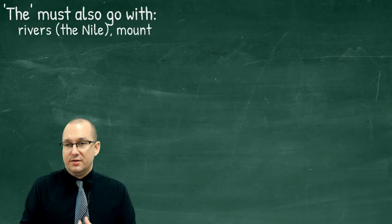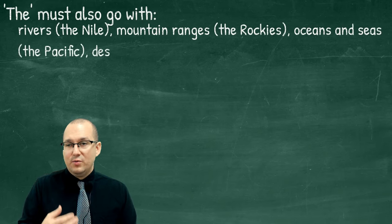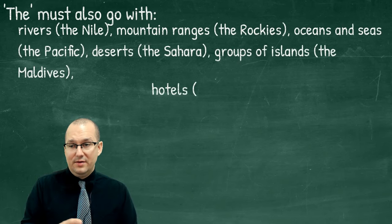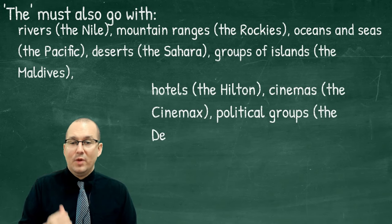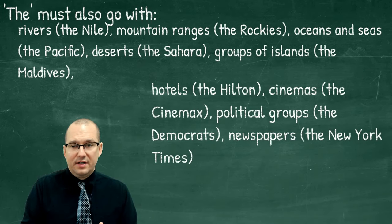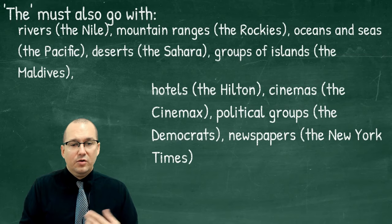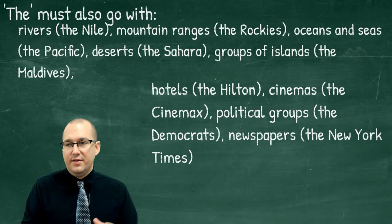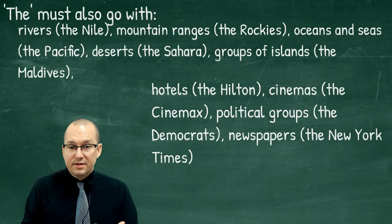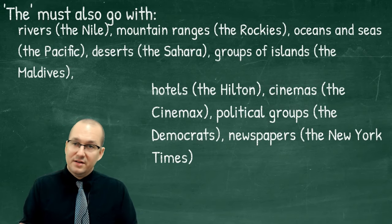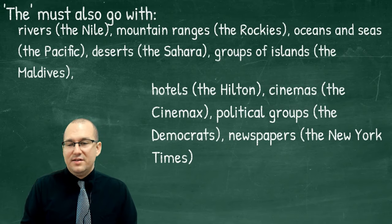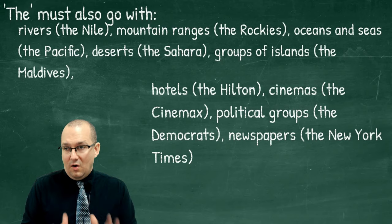'The' must also go with rivers — like the Nile; mountain ranges (not one mountain, but ranges) — the Rockies, the Andes; oceans and seas — the Pacific, the Atlantic; deserts — the Sahara; groups of islands — the Maldives, the Galapagos; hotels — the Hilton, the Ramada; cinemas — the Cinemax, the Odeon; political groups — the Democrats, the Republicans; and newspapers — the New York Times. Again, it's not always like this, but generally all of those things have 'the' in front of them.